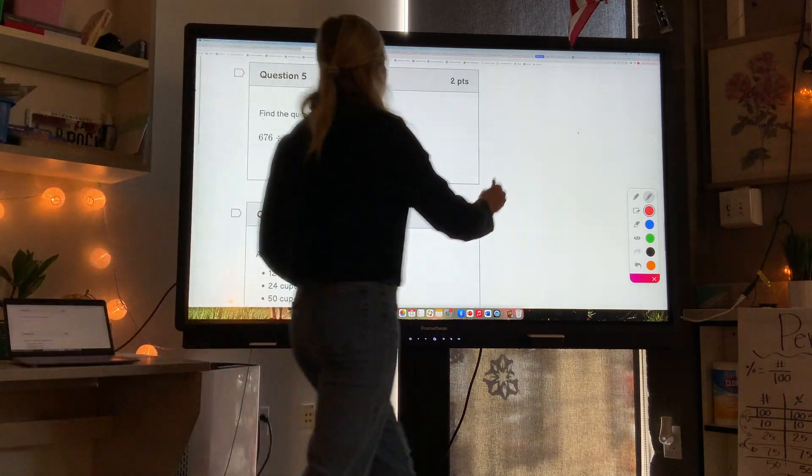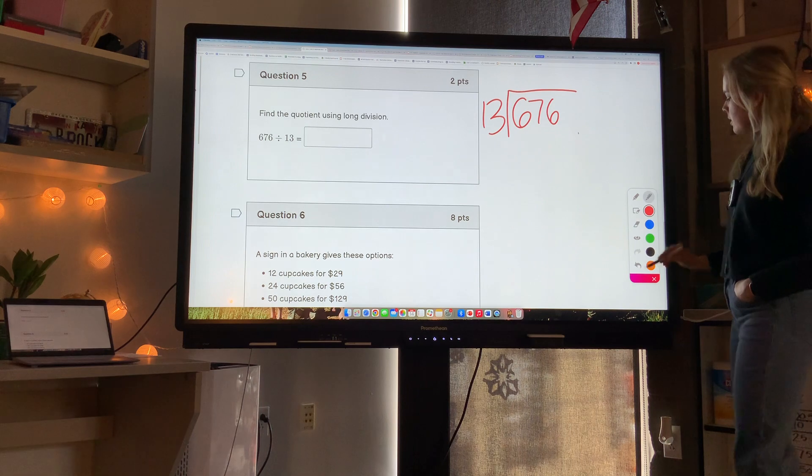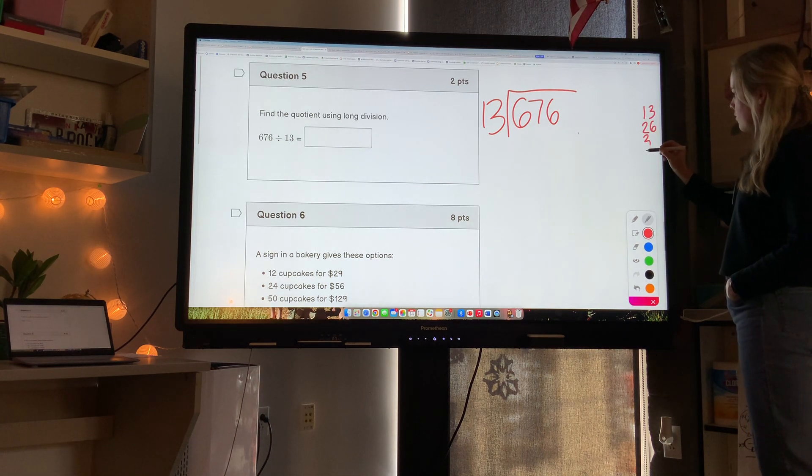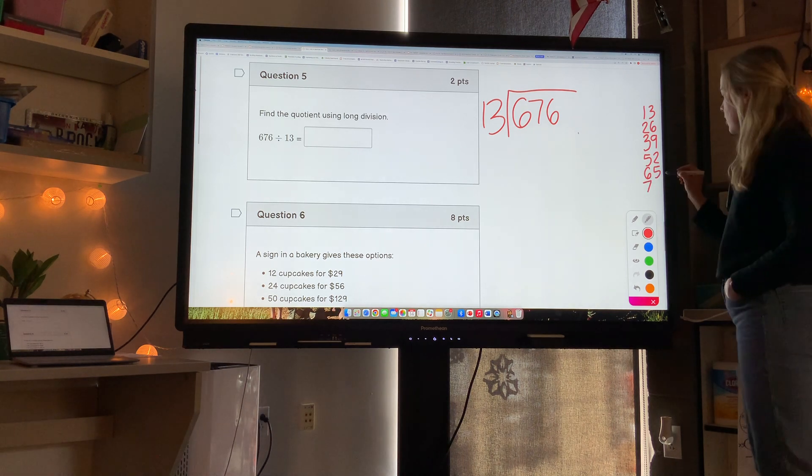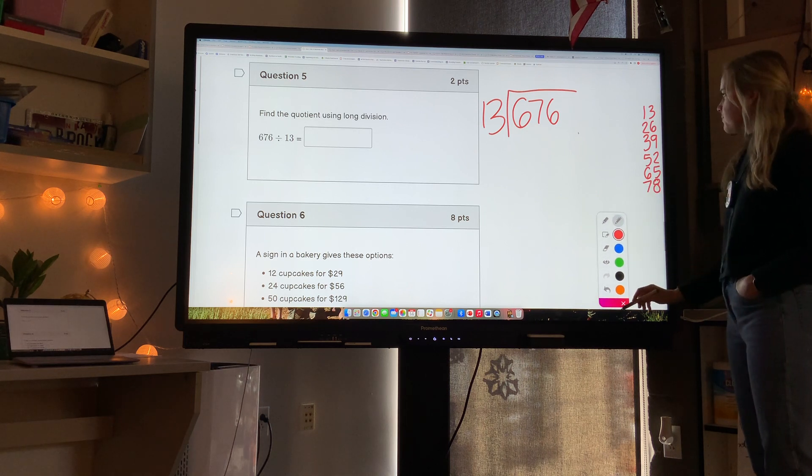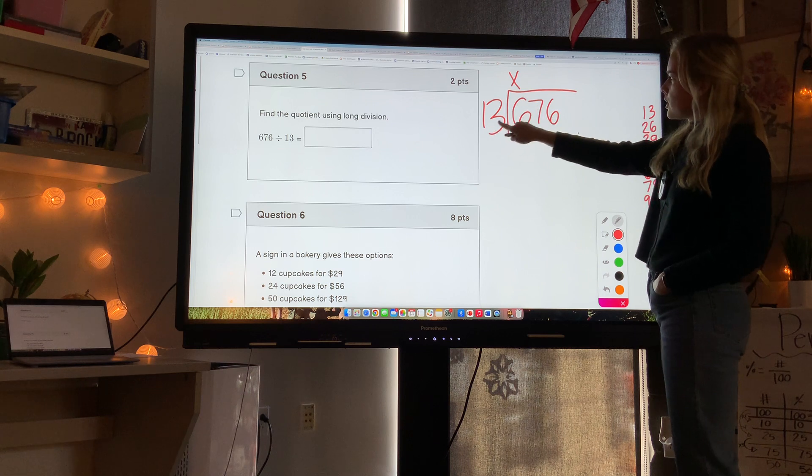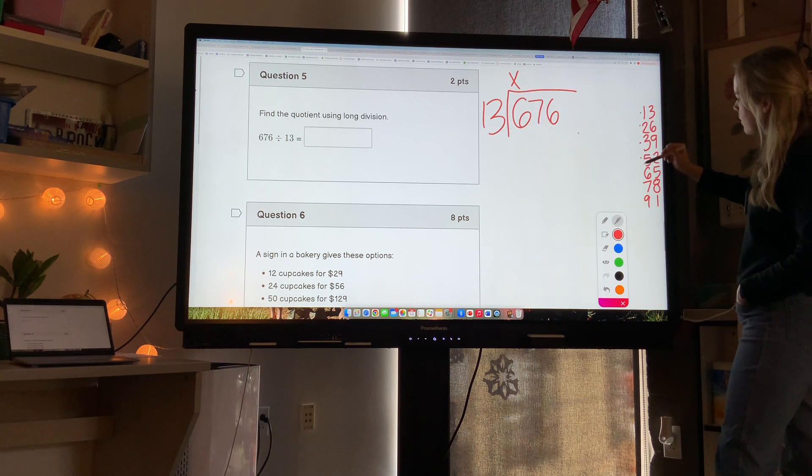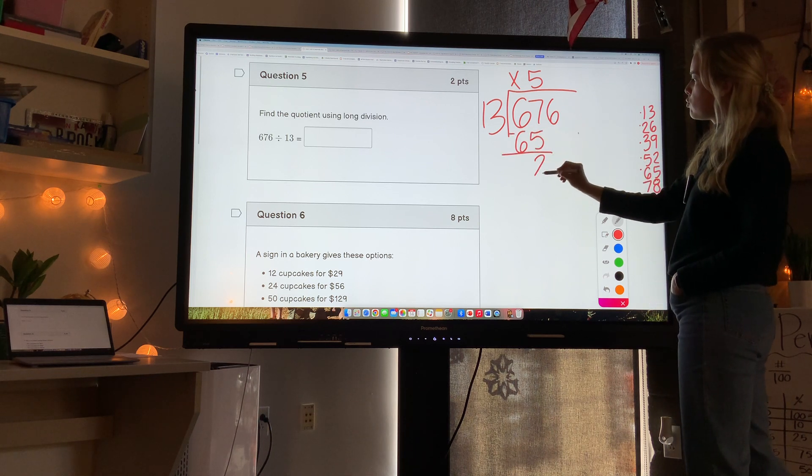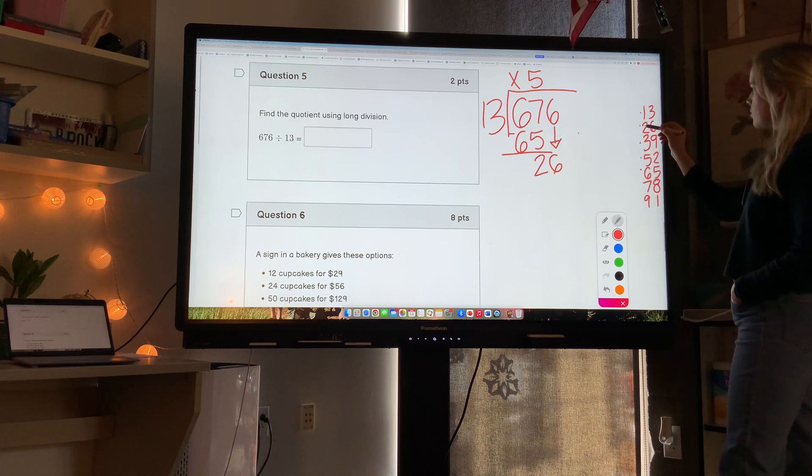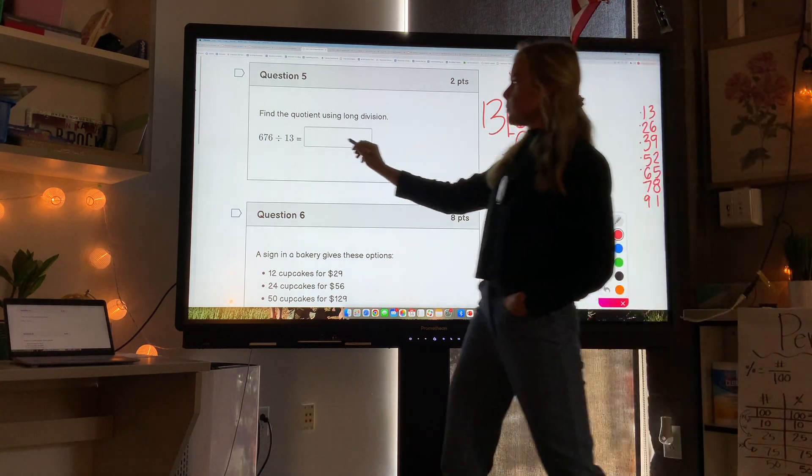Next one, find the quotient. We have 676 divided by 13. This one you may not know your 13s, so one idea is to just kind of count by 13s on the side so you have some multiplication facts of 13 to go off of. Of course when you're taking the RISE test or end of year test, you won't have this here, but it's a good place to start. So 13 doesn't go into 6. 13 goes into 67 five times. Five times 13 is 65. 67 minus 65 is 2. Bring down the 6. Two times 13 is 26. So this one's nice and easy. The decimal is after here, so we don't need to bring it up. So just 52.